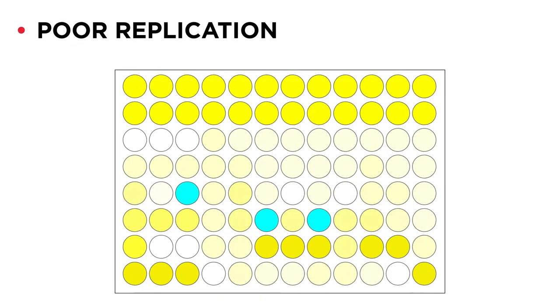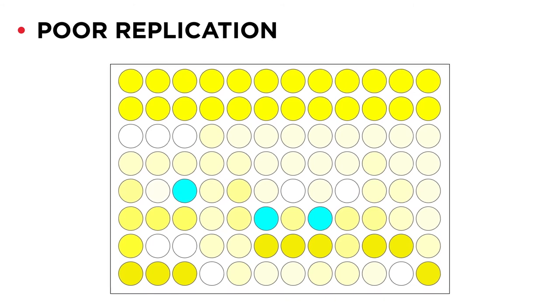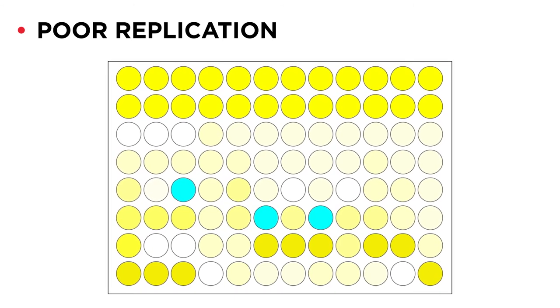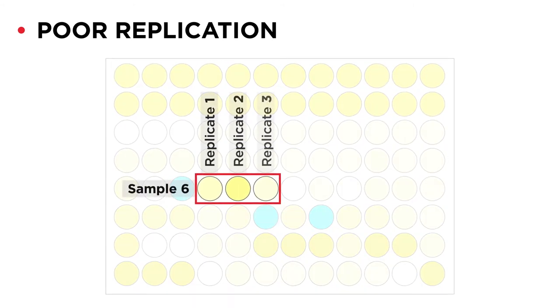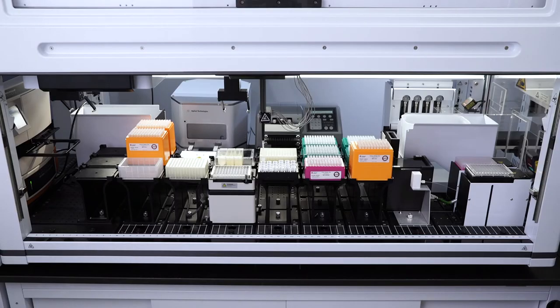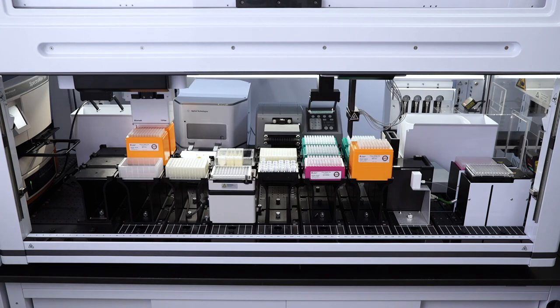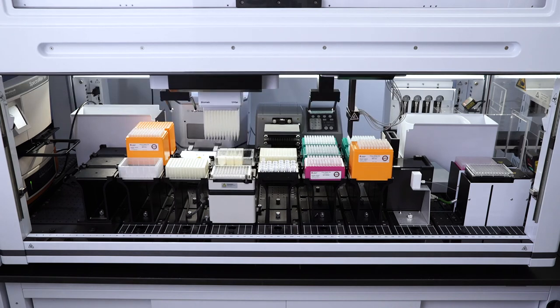ELISA requires consistent pipetting so that you can avoid technical variation and focus on biological variation. However, when pipetting manually it is impossible to pipet every sample the same way. By using automation you can easily achieve consistency between samples and assay plates as the Biomek treats them in a uniform manner.